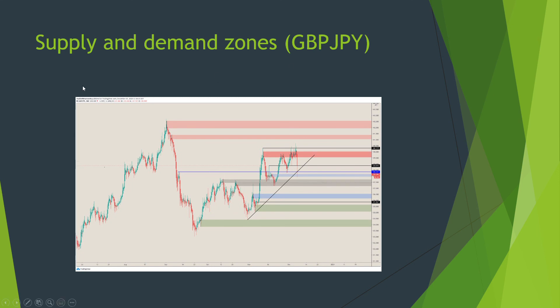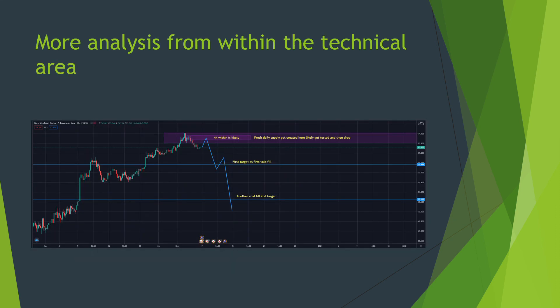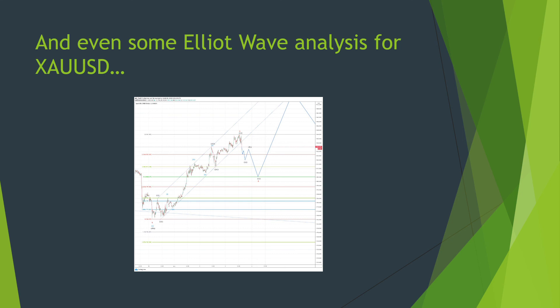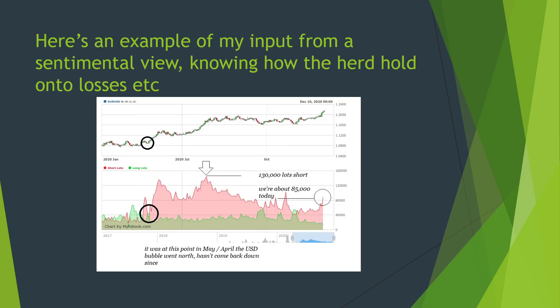In the technical analysis group you'll see things like supply and demand analysis — for example, a subscriber posted pound-JPY showing a break of the diagonal with resistance, which supplements the sentiment. There's also analysis from another analyst on kiwi-JPY, projecting price according to supply and demand. Some ideas are based on sentiment — at the time, this would have been a signal. You also get early Elliott wave analysis for gold, which is pretty cool.